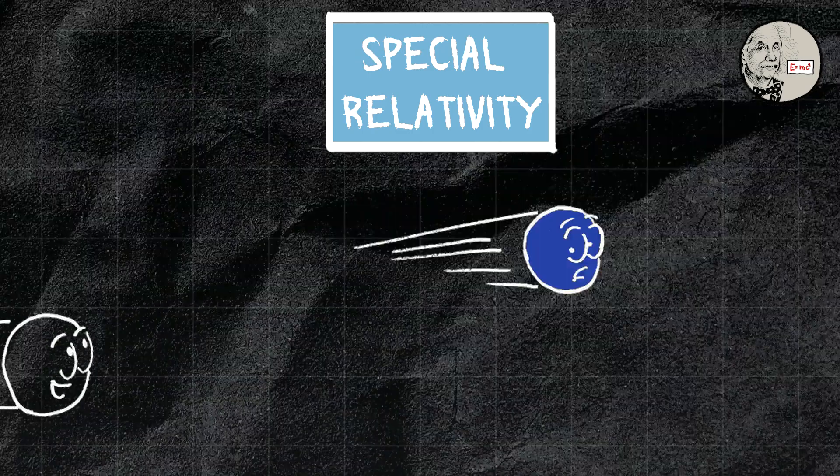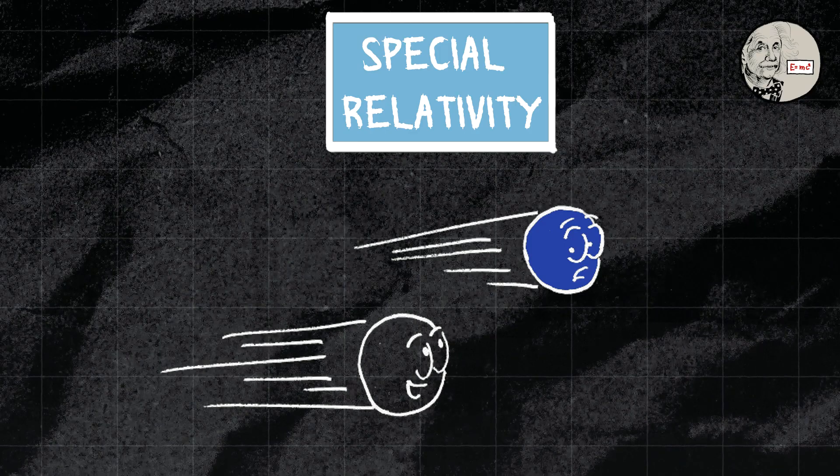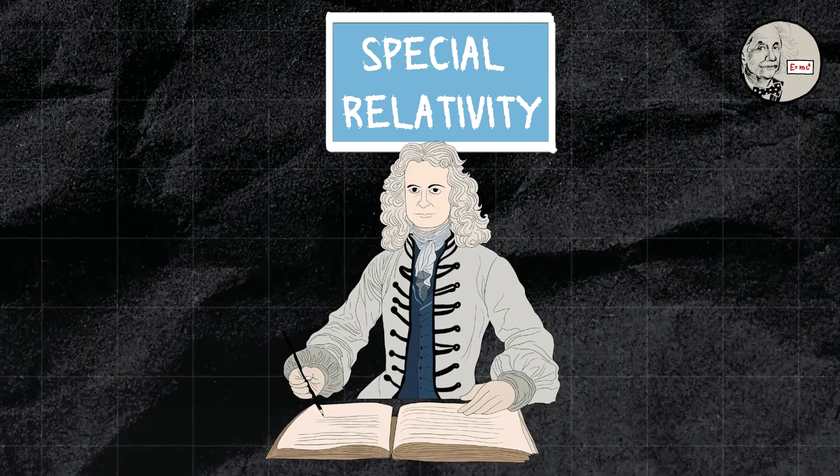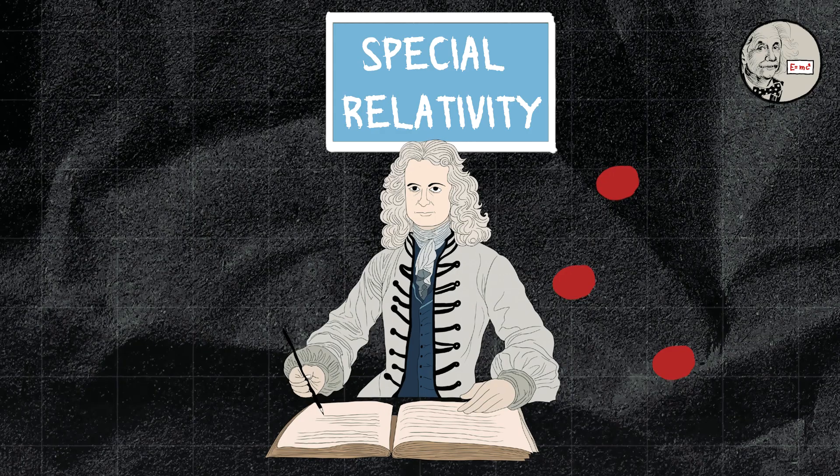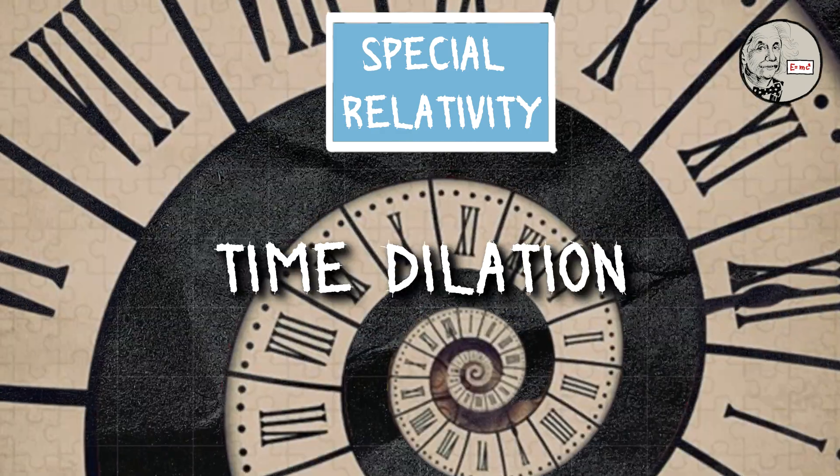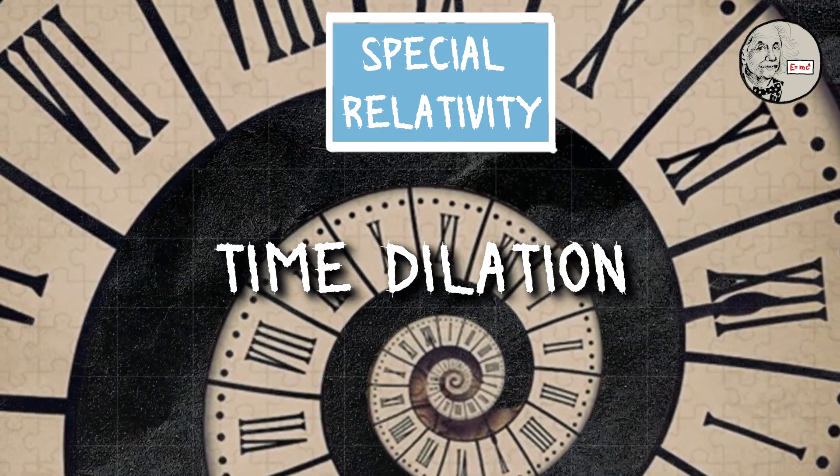Special relativity deals with the bizarre behavior of things moving at super fast speeds, close to the speed of light. Here, the laws of physics are the same for all observers in uniform motion relative to one another. But things get weird when time dilation comes into play.